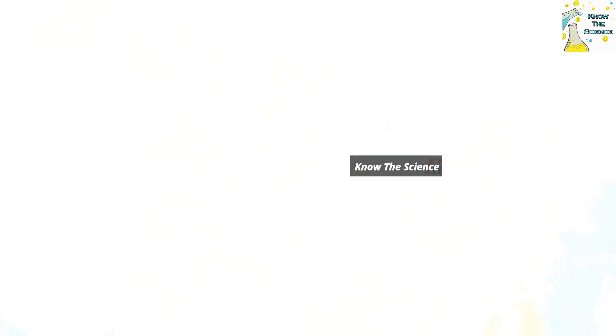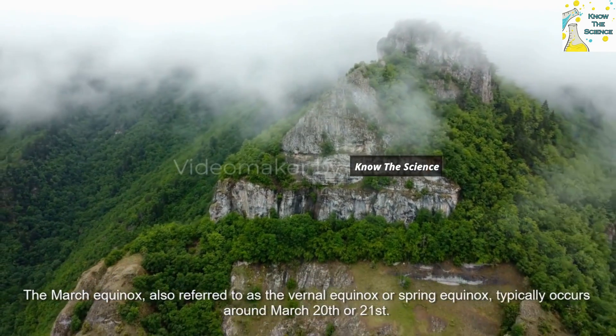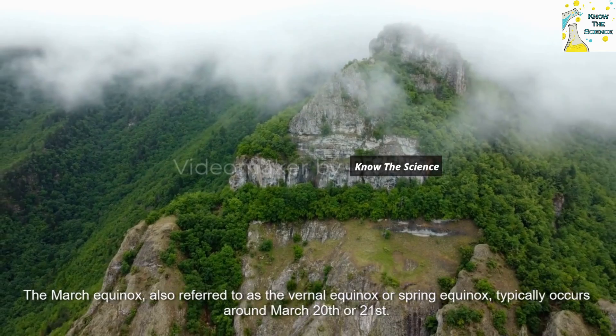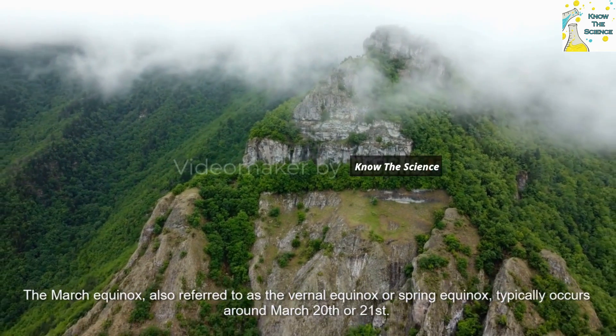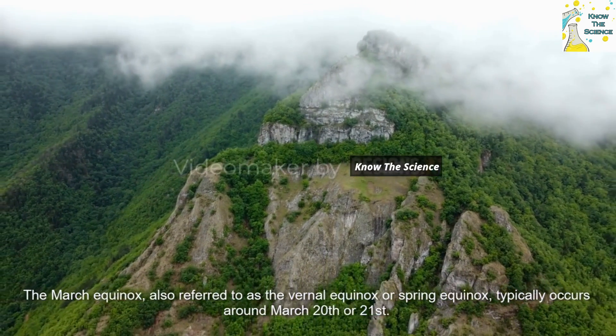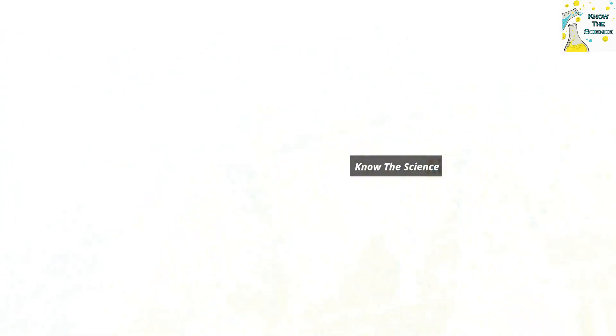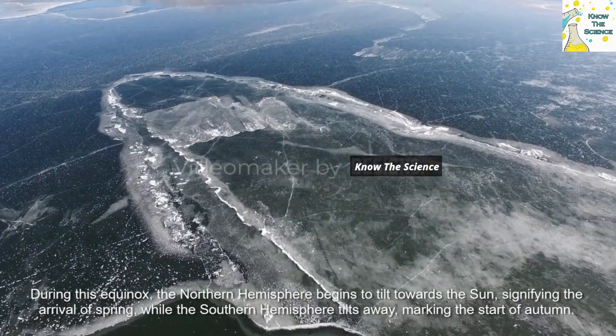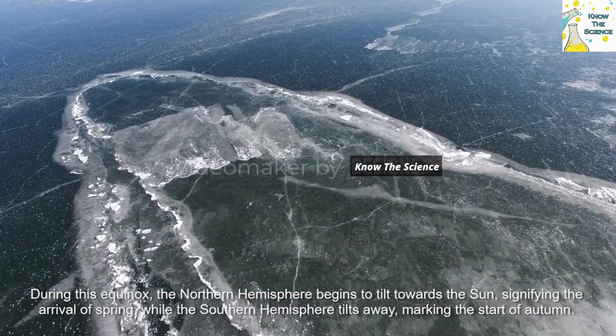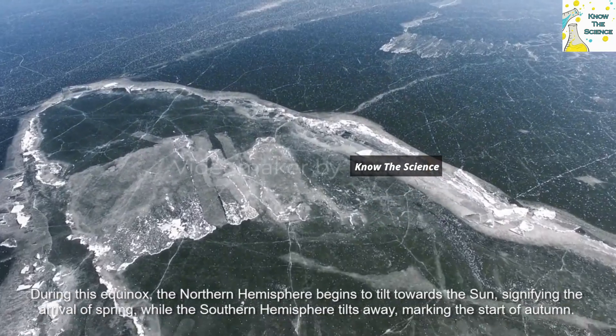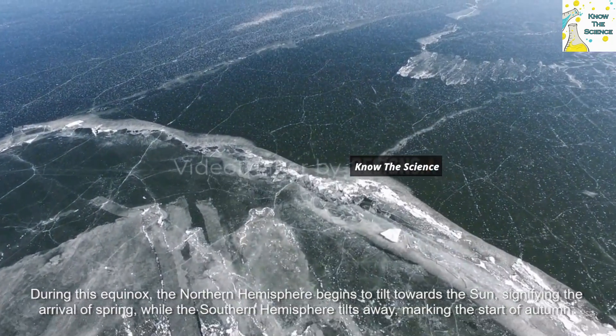The March equinox, also referred to as the vernal equinox or spring equinox, typically occurs around March 20th or 21st. During this equinox, the Northern Hemisphere begins to tilt towards the Sun, signifying the arrival of spring, while the Southern Hemisphere tilts away, marking the start of autumn.